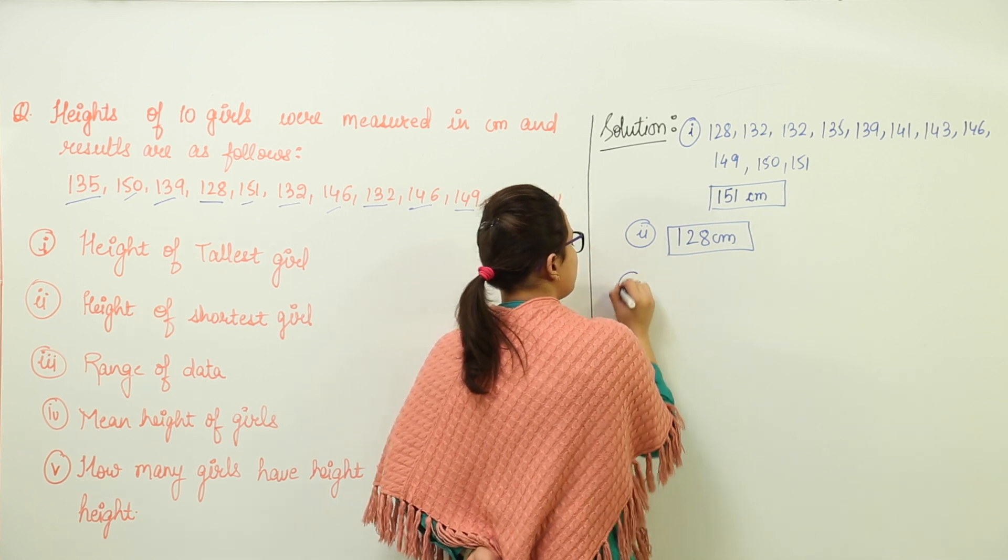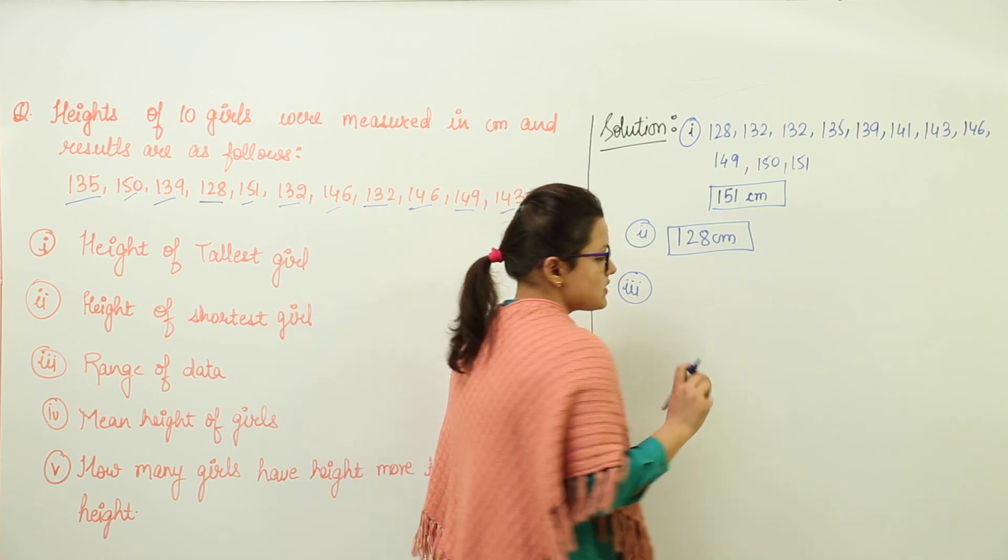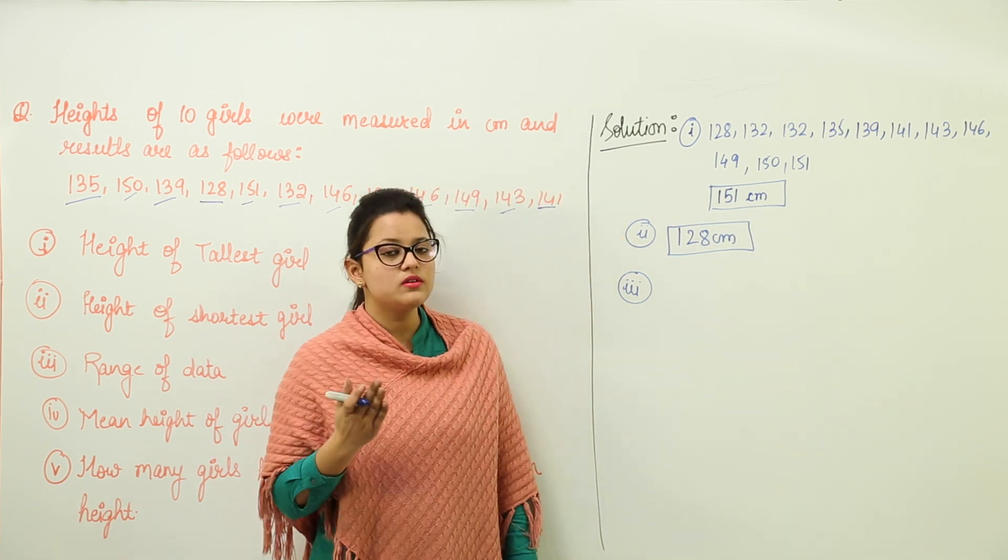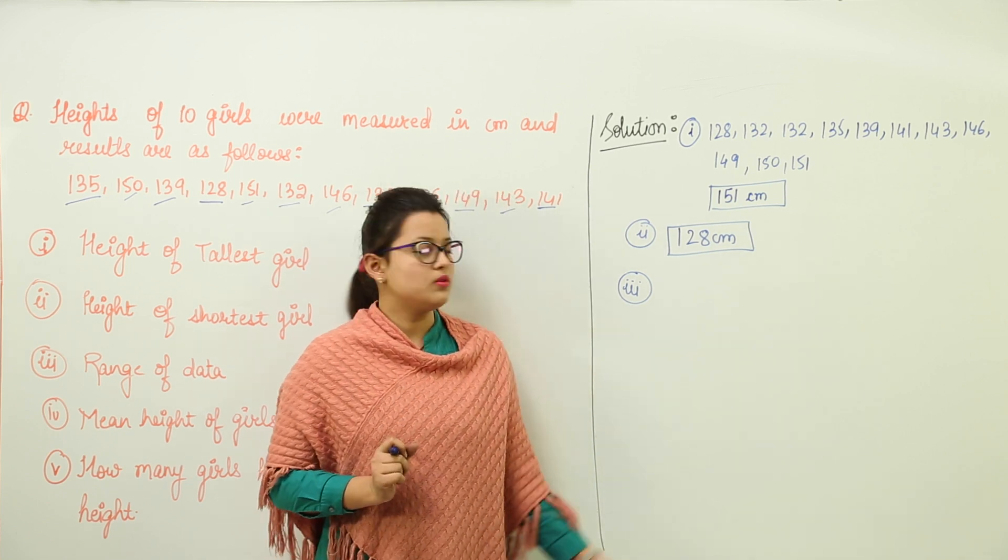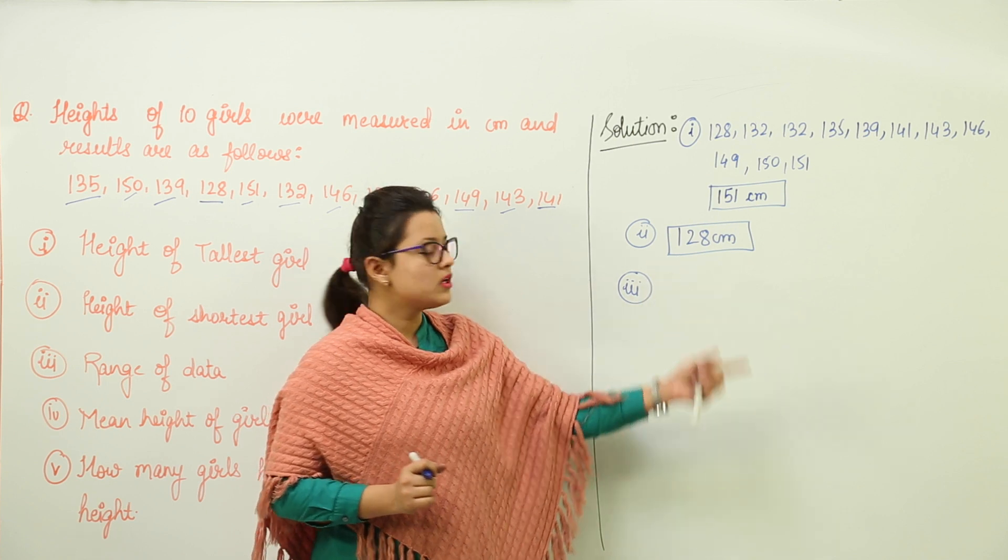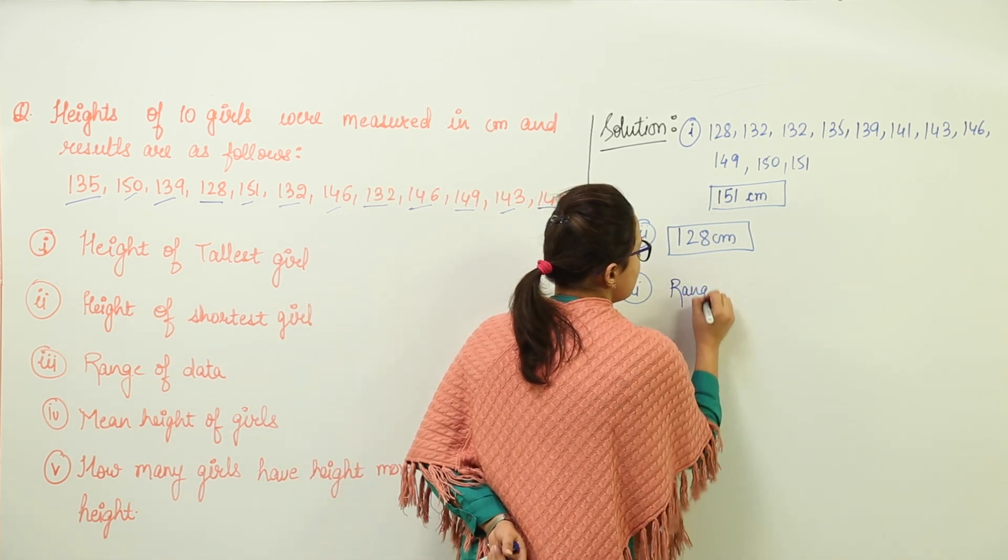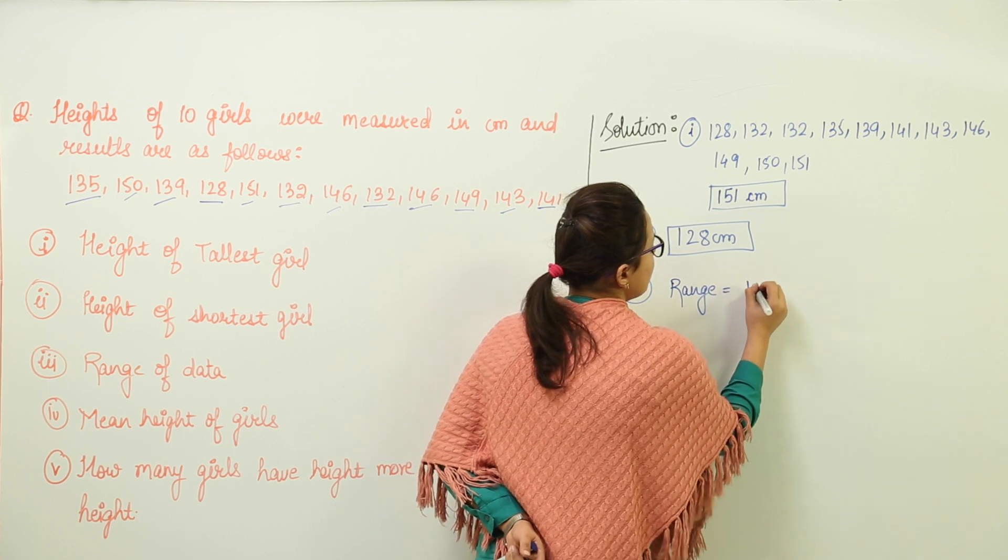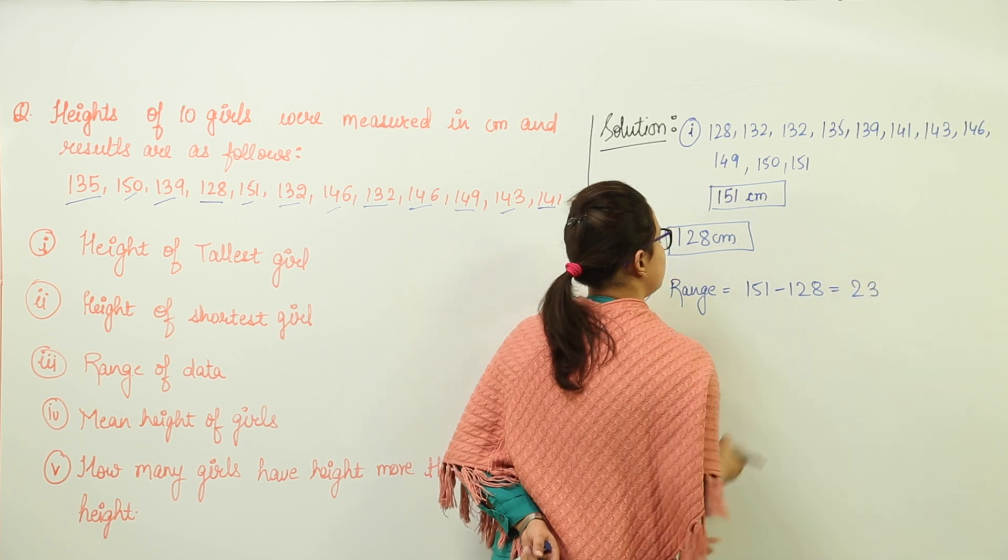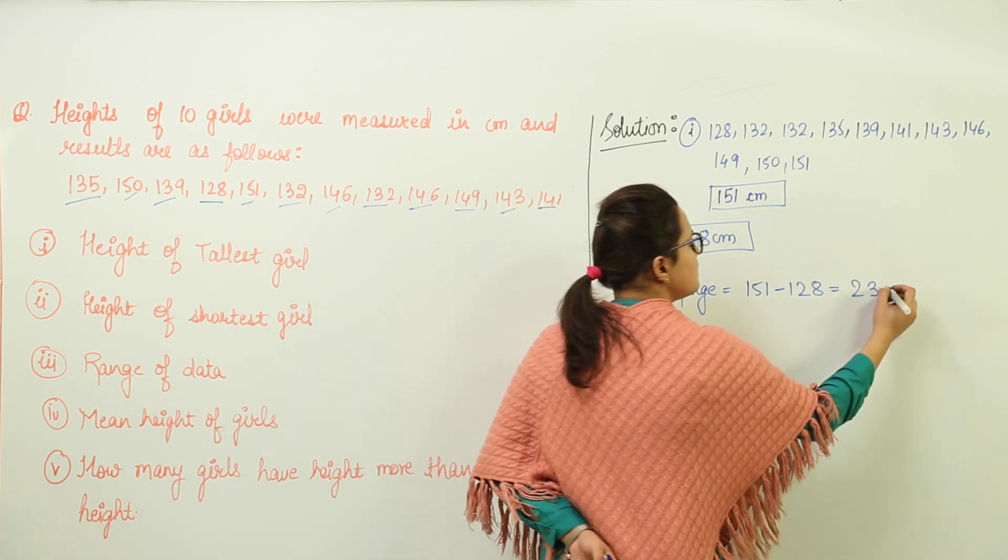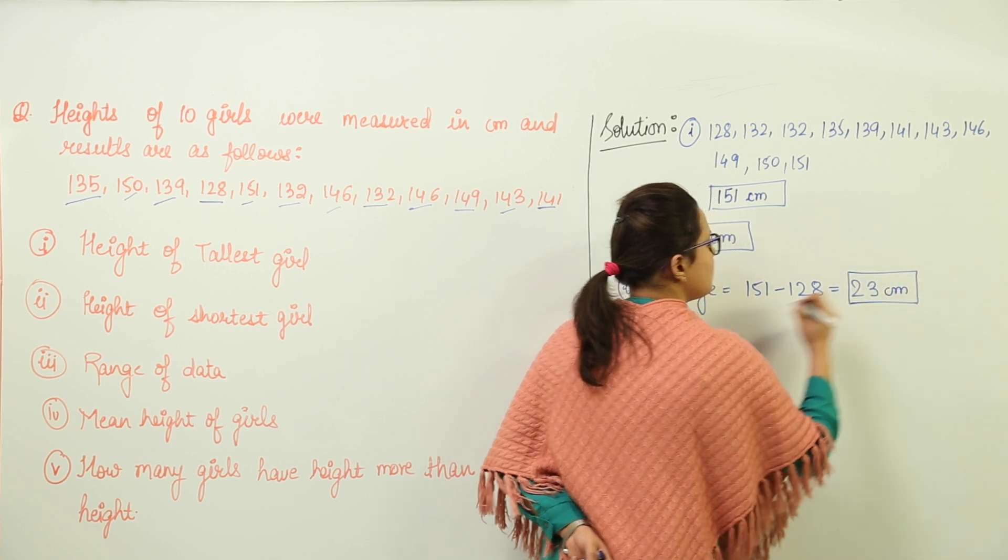What about the third one? The third is saying range of data. Now as we discussed, how is range calculated? Range is the difference between the highest and the lowest value. So we have both the values already taken out, so we will subtract them. That is, the range would be equal to 151 minus 128, that is equal to 23. That means 23 centimeters is the range of the given data.